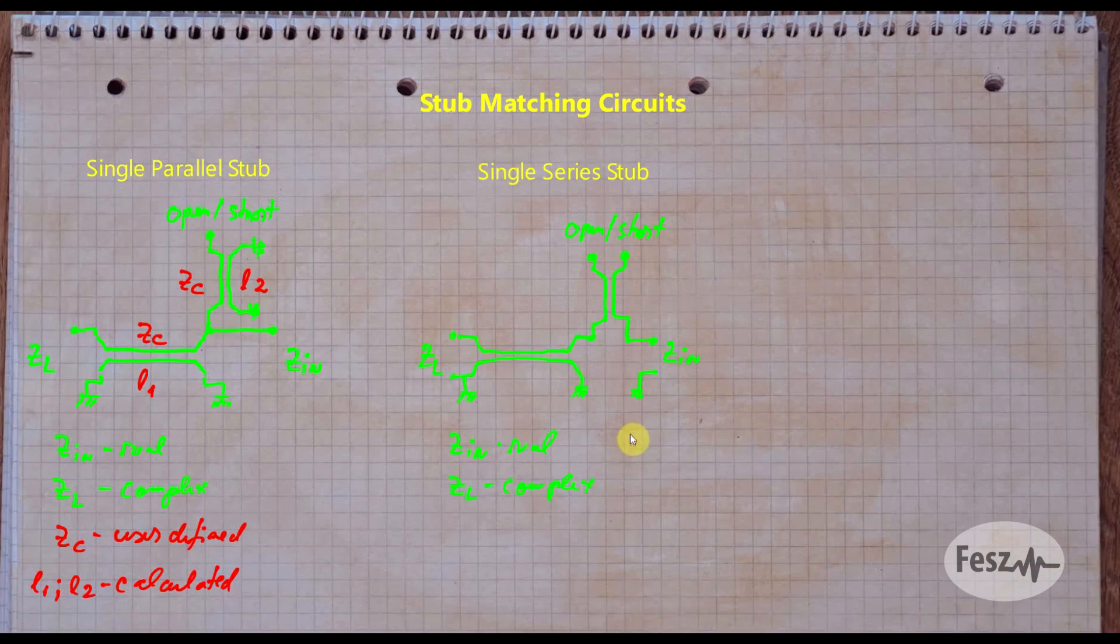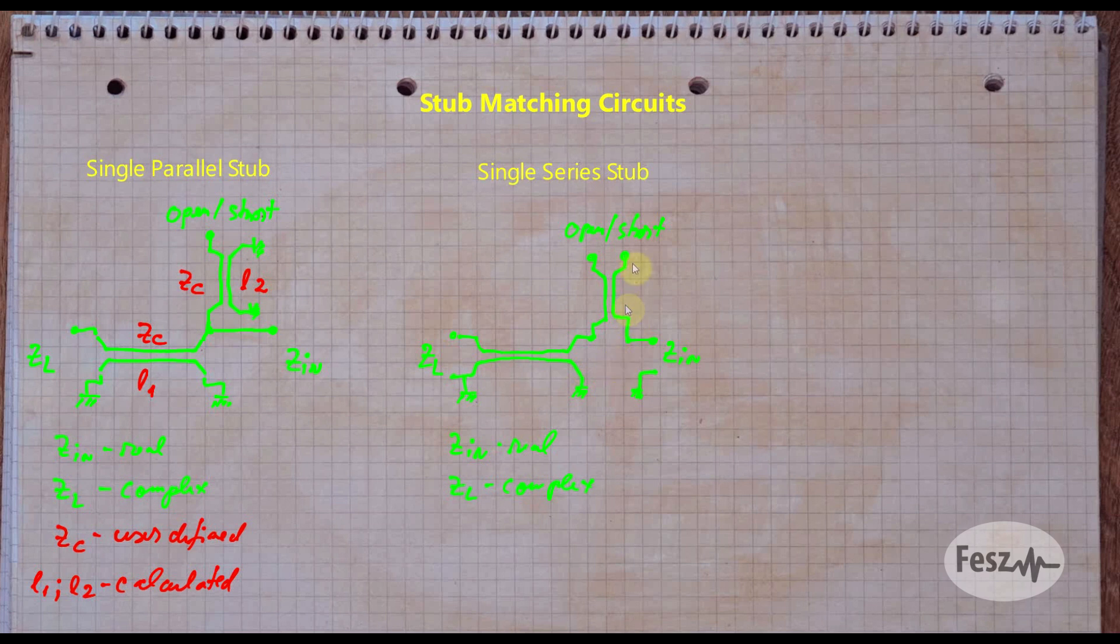One variation of the circuit involves using the matching stub in series rather than in parallel. Here the same basic ideas apply, so the stub needs to be on the real only side of the circuit, and the transmission line impedances can be fixed, and only the lengths determined.